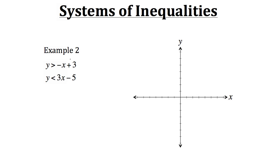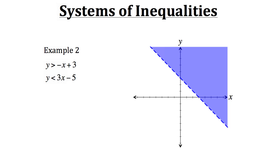Let's start off by graphing the first inequality: y is greater than negative x plus 3. We'll draw a line as if we were drawing y equals negative x plus 3, and it'll look like this. It's a dotted line because the solution does not lie along this actual line — y does not equal negative x plus 3, it can only be greater than that. So we'll shade in the region above that line.